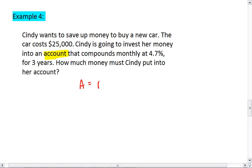Okay, bank problem. That compounds monthly at 4.7%. Again, make sure R is in decimal form. For 3 years. How much money must Cindy put into her account?